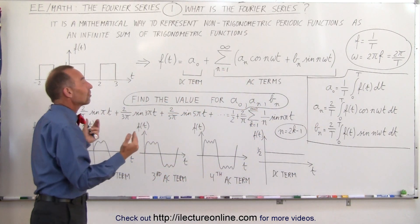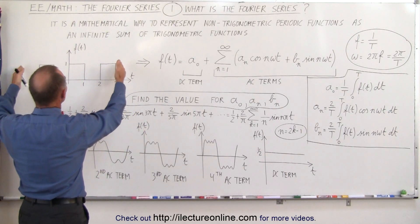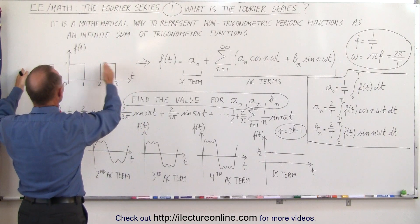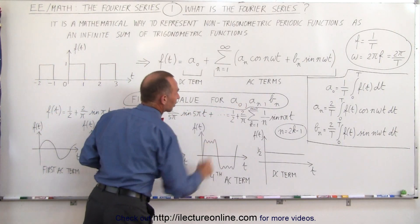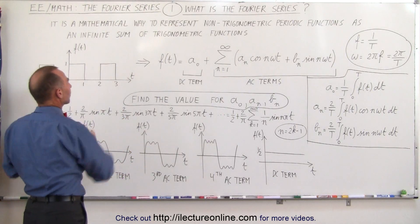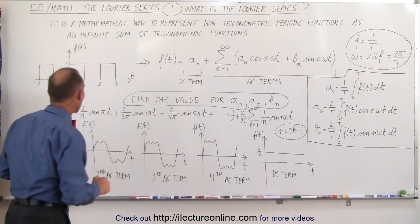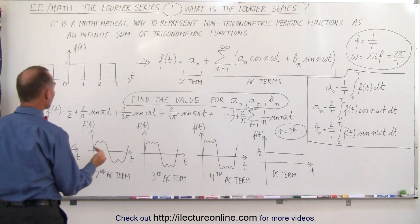So it comes down to if you want to find the Fourier series of a periodic function, in this case a square wave function, it comes down to finding the values of these particular constants. If we do that for this particular example, and we'll show you later how to actually accomplish that, you'll end up with something that looks like this.